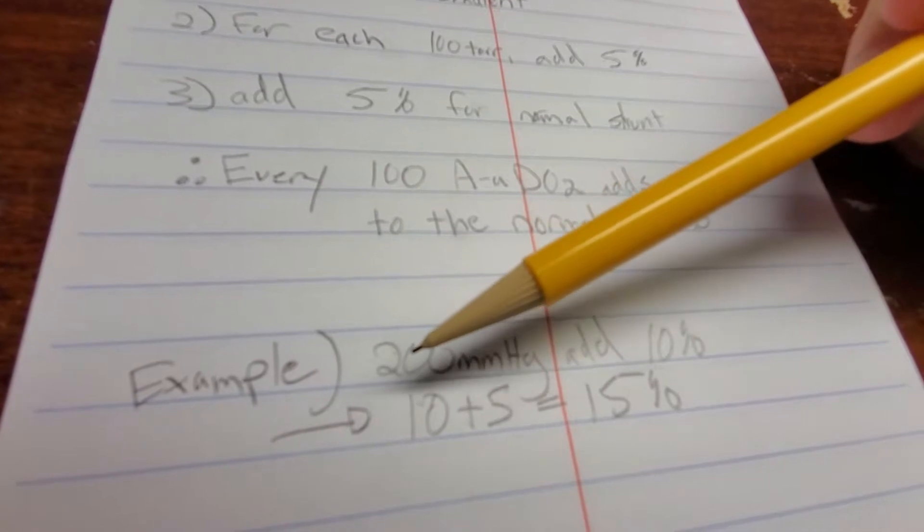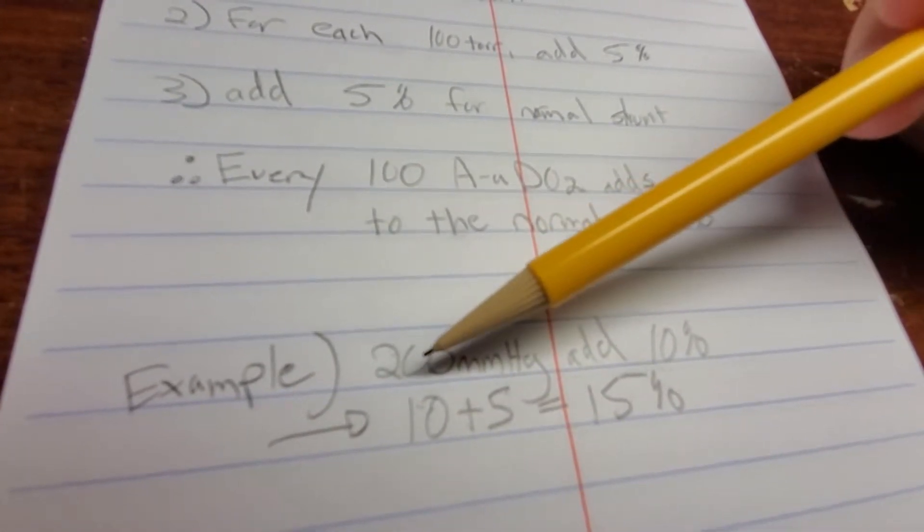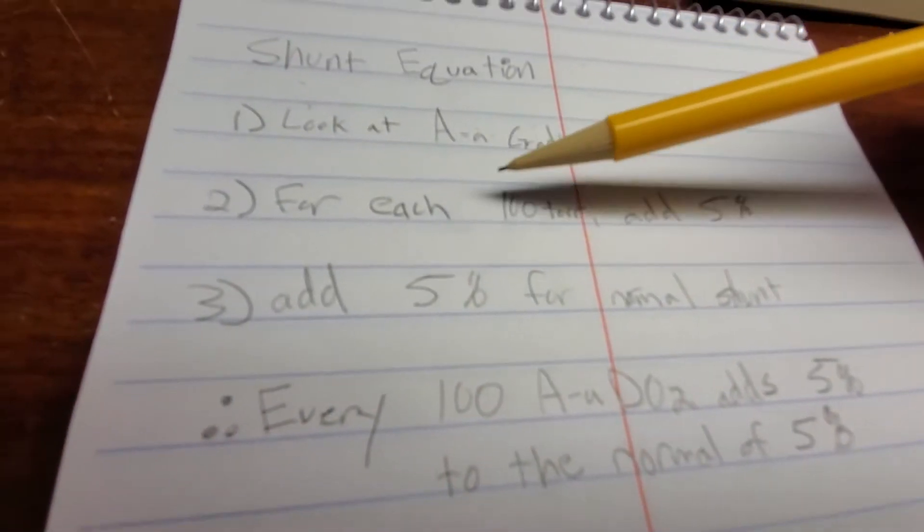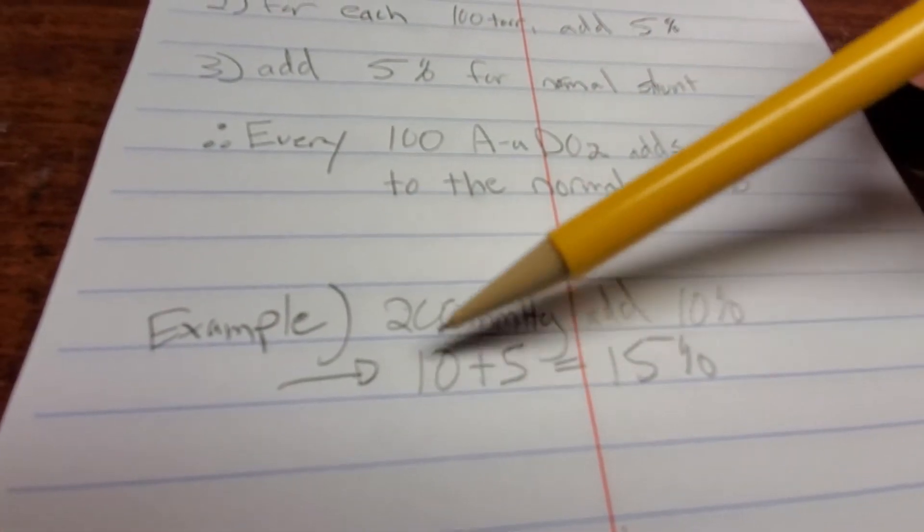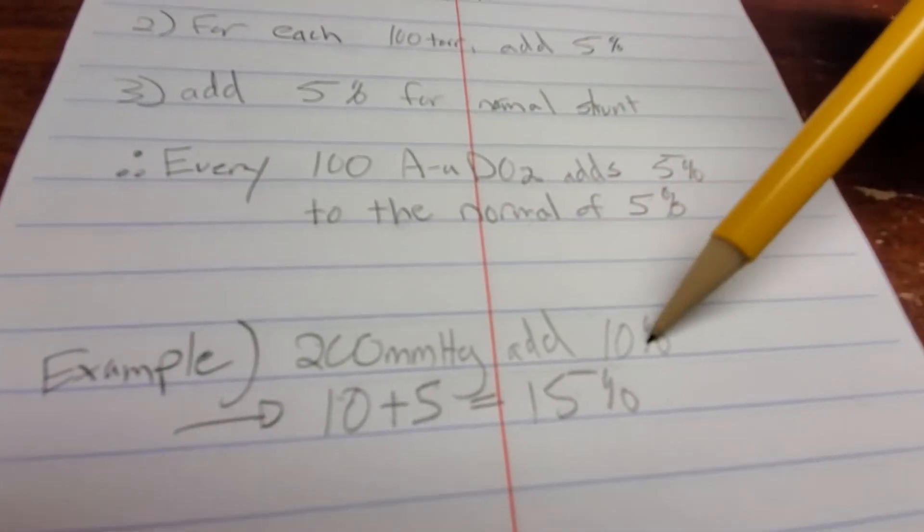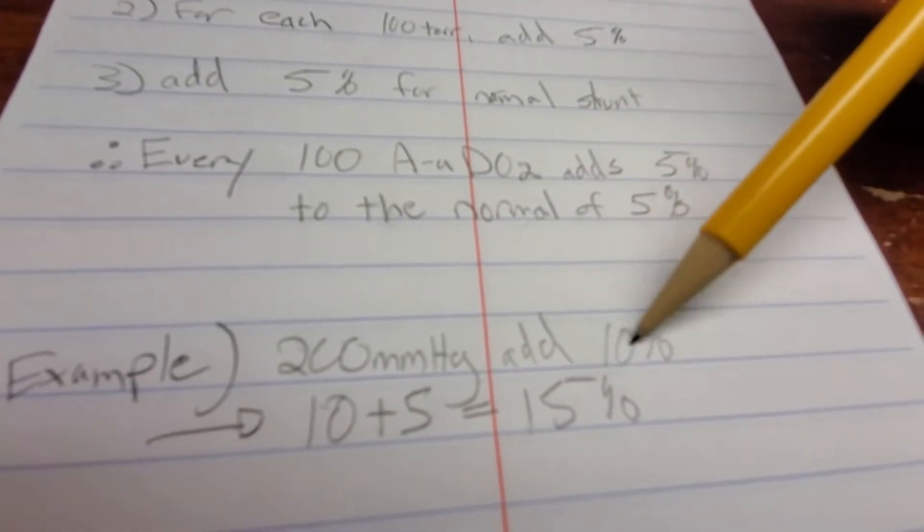Let me just show you an example. So the example I have here is 200. So because it's 200, that means we're going to do, so I said for each 100 add 5%. So we got 200, so that means it's going to be 10%. If it was 400, it would be 4 times 5, it would be 20%.